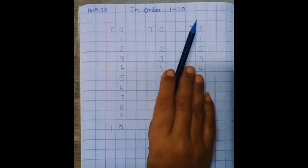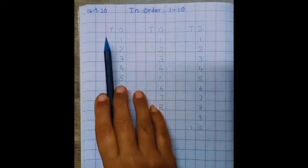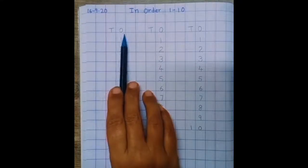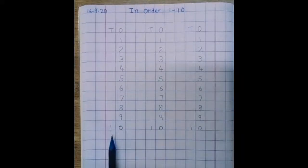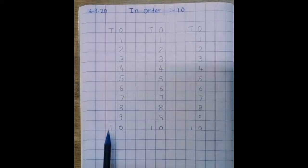In order 1 to 10. T means tens. O means ones. Single digit number you have to write below O. And 1, 0, 10. It's two digit number. So, 1 you have to write below T.